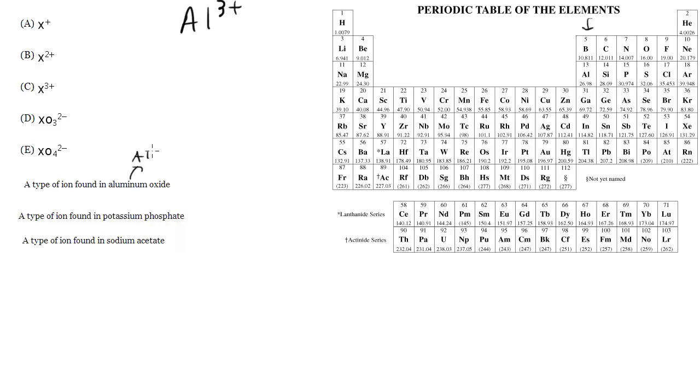So this is going to be Al three plus. Oxide is almost always minus two, rare exceptions but almost always minus two, you can pretty much trust it's going to be minus two. So what compound does this form? Well Al three plus, O two minus, I like doing the cross multiplication method so you just move the charges down there and you get Al two O three.